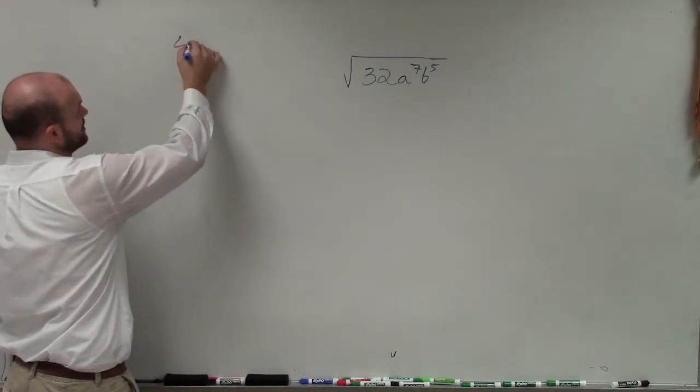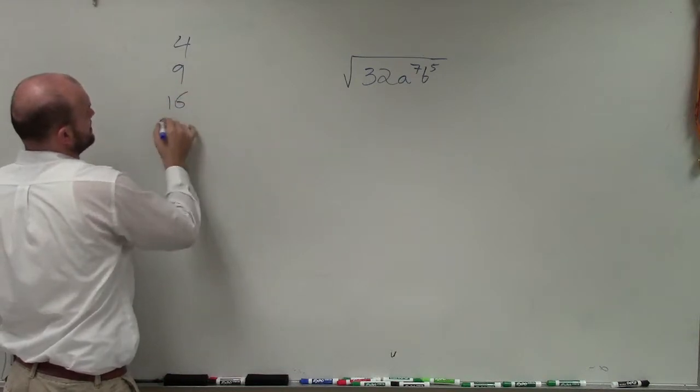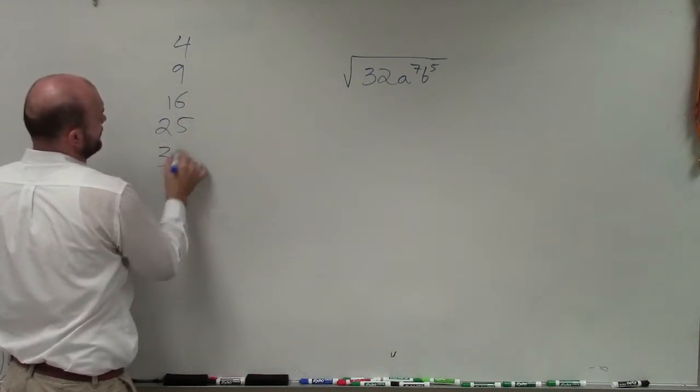Those numbers are what we call perfect squares. For instance, 4, 9, 16, 25, 36.